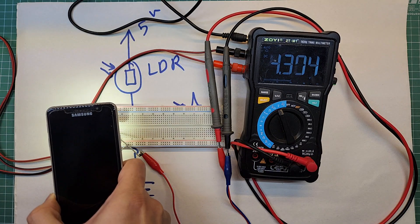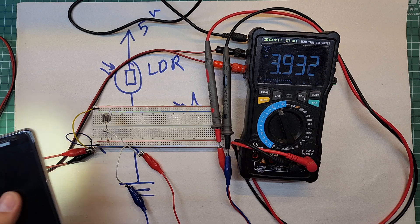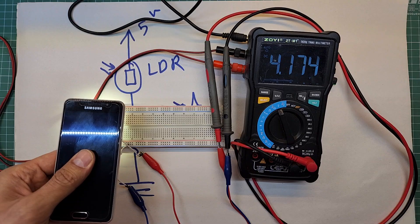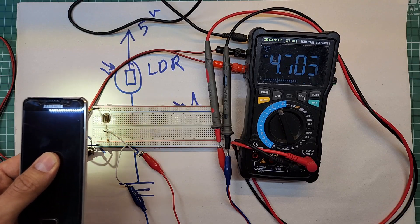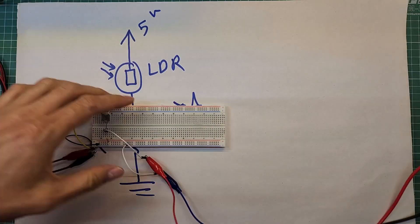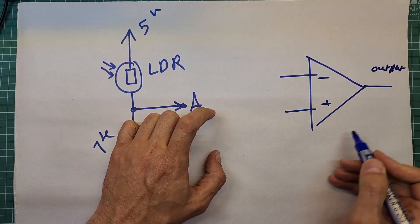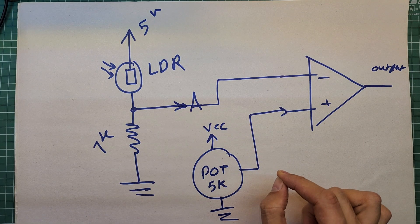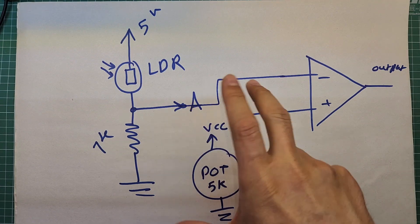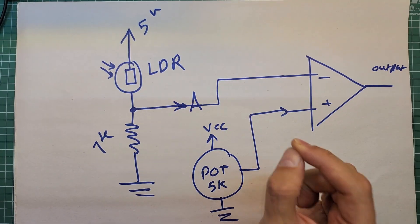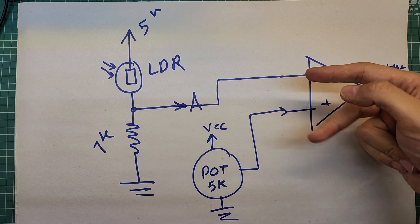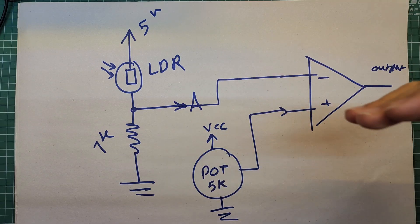Look here. When the illumination level increases, the voltage at point A increases as well, and when the illumination level decreases, the voltage at point A decreases. Now, you can use this variable voltage as input to the system. For example, by using an op-amp in comparator mode, you can make a photocell. This potentiometer produces a reference voltage from 0V to Vcc depending on the handle position, and this circuit produces a variable voltage according to the illumination level. This op-amp will compare the two input voltages, and if the voltage at the inverting input is lower than the voltage at the non-inverting input, it will activate the output.